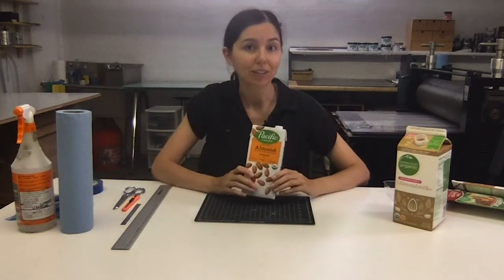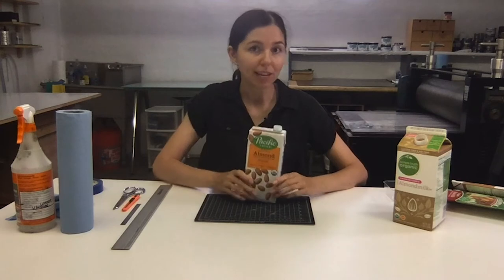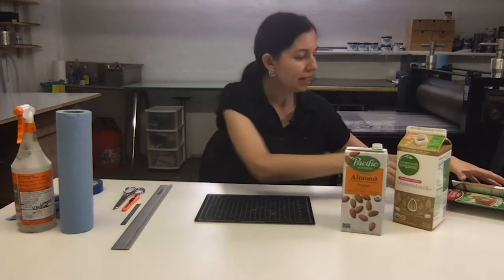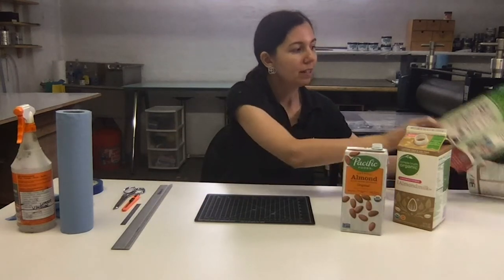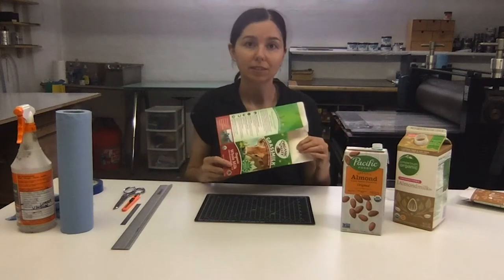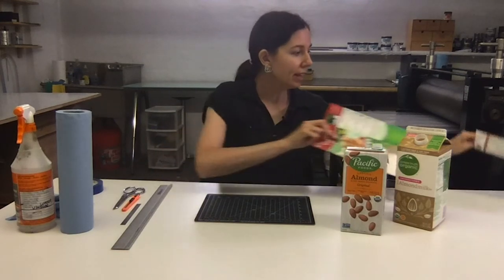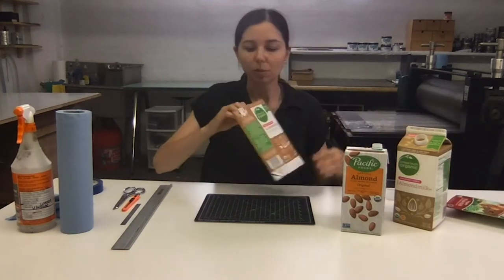Tetra Pak is a material that's often used in food packaging. There are two different types of Tetra Pak. The first is a coated paper material and then the second is a coated what appears to be aluminum material.